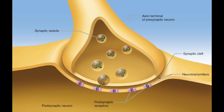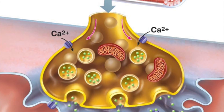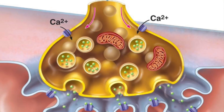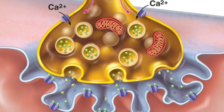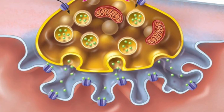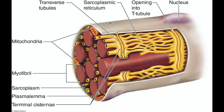Now at the end of the axon, we reach the site of communication between the motor neuron and the muscle fiber — the neuromuscular junction. At the end of the axon is the pre-synaptic neuron, which houses synaptic vesicles containing the neurotransmitter acetylcholine. As the action potential reaches the neuromuscular junction, calcium enters the pre-synaptic neuron, and acetylcholine is released across the synaptic cleft and binds to receptors on the plasmalemma — the membrane surrounding the muscle cell.